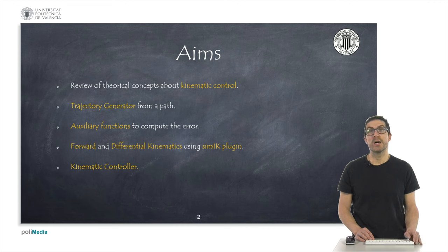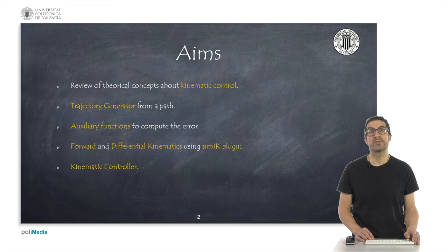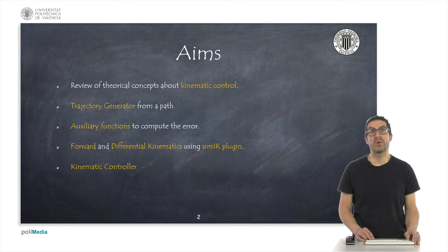Later, we will see how to create a trajectory from a path, which will allow us to obtain the position and orientation of a reference frame to follow. Then, we will see some auxiliary functions for calculating the error between the reference orientation and the end effector orientation. We will also briefly review some functions and variables needed to compute the forward kinematics and differential kinematics using the SIMIK plugin. Finally, we will see how to implement the kinematic controller once all previous steps have been completed and show a demo for a couple of examples.